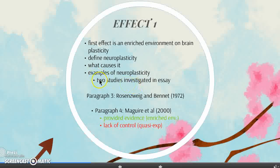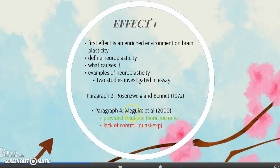You have to give examples of neuroplasticity and mention case studies, for example Clive Wearing, patient KF, or patient HM — just mention one of them. Then you go and mention the two studies investigated in your essay to support effect number one. The two studies are Rosenzweig and Bennett 1972 and McGuire et al. 2000.